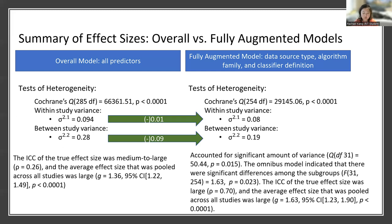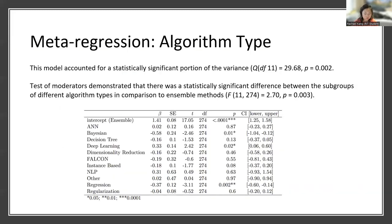When we looked at the omnibus models of the moderators, results indicated that there were significant differences among the subgroups of the moderator variables. Specifically, we're going to take a look at the algorithm type meta-regression, because this was the only model that returned a significant result. These results indicated that the type of algorithm used had a significant impact on the accuracy of the machine's ability to predict suicide risk.